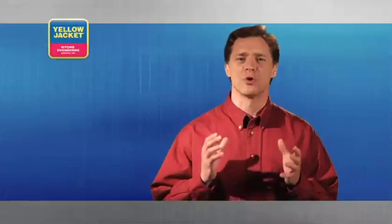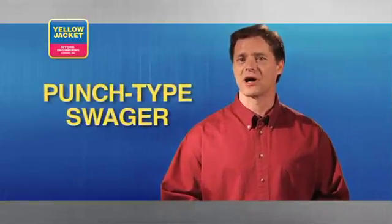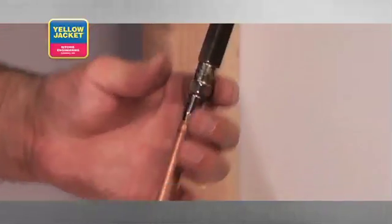First, let's look at the traditional punch type swager. As the name suggests, this tool is designed to punch the end of your tubing. Simply insert the lead end of the punch into the tubing.